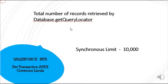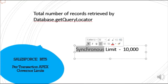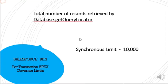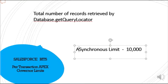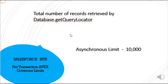Total number of records retrieved by a database query locator — the database query locator is what you use in batch Apex — the maximum number of records you can process in batch Apex is 10,000, and that is asynchronous.